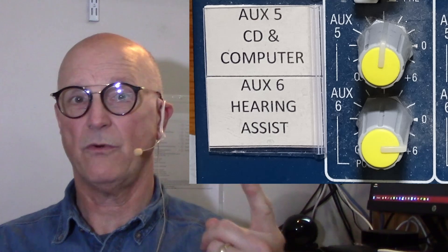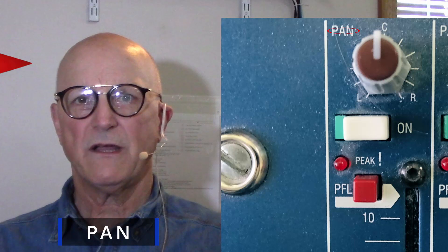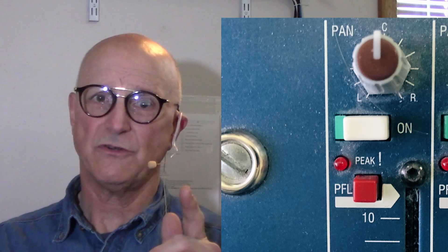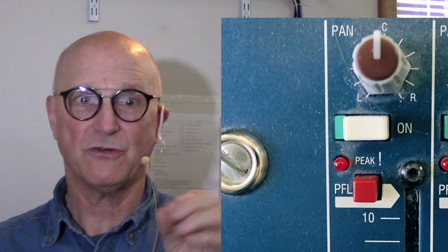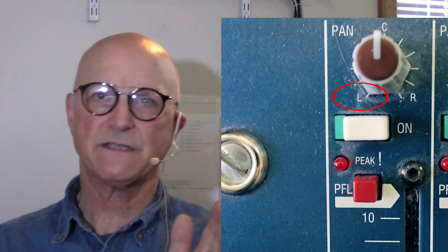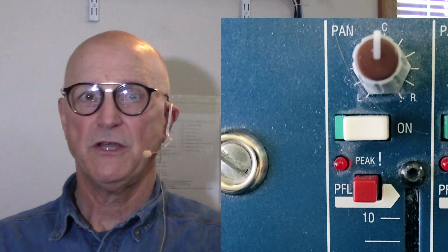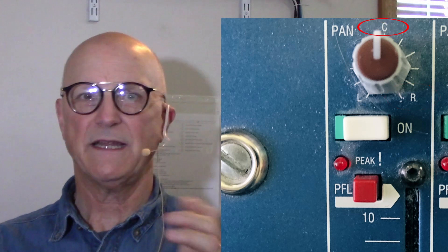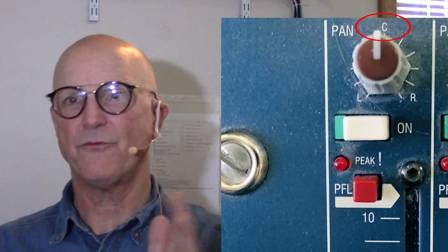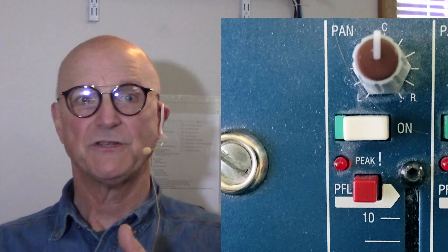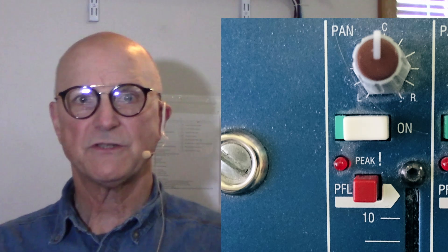In our case, these last two feeds go to the computer audio input for recording and the hearing assistance transmitter. The next control we come to is the pan control. The main output of the mixing board has both left and right channels. This pan control allows us to choose how much of the particular channel signal goes to the left output and how much goes to the right output. Turning this control fully counterclockwise sends all of the signal to the left main channel. Turning it fully clockwise sends all of the signal to the right main channel. Setting it in the middle sends an equal amount to both. So if you are looking to record in stereo, your left mic should have this fully counterclockwise and the right mic fully clockwise. Generally, for most situations like what we are doing here, this control sits right in the middle.